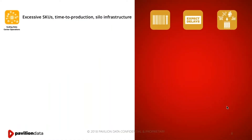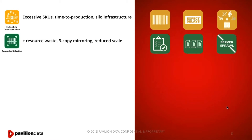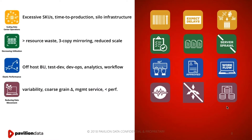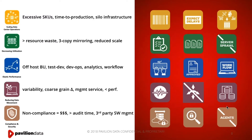Looking a little deeper: from a scaling data center operations perspective, you end up with excessive SKUs and the inability to get your applications to production and market when you want. You end up with siloed infrastructure. When we talk about decreased utilization, you have incredible waste from three-copy mirroring — you need three times the capacity, which affects both performance density and capacity density. When talking about elastic performance, you end up moving certain applications off host, like TestDev, DevOps, analytics, and workflows, which reduces scale and increases cost. And there's variability in performance, so you have to move data to maintain consistent performance, all adding cost and complexity.